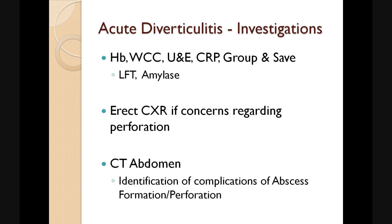In any patient that presents with acute diverticulitis, we want to take some bloods. We want to know what the blood count is, especially if they're bleeding from the back passage, the white cell count, which indicates the degree of inflammation, as well as the CRP, and the urea and electrolytes. If they've been complaining of loose stools, it's important to consider whether they're going to require any IV fluid resuscitation. We also want to make sure that the patient is grouped and saved, so that they're prepared for theatre should they need it. We also want to rule out other causes of abdominal pain, such as choledocolithiasis and pancreatitis, hence why we want to make sure that the LFTs are within normal range, and also that the amylase isn't significantly raised.